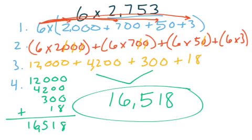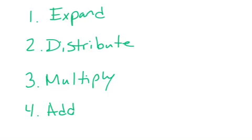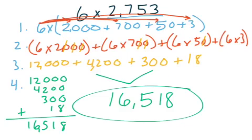So remember, the most important part is that we're using all four of our steps. The first step is to expand, second step is to distribute, third step is to multiply, and our final step is to add. Also make sure on your homework tonight that you are using a separate sheet of paper — there's not enough room on your homework sheet to do all of these steps and be able to see your work. All right, guys, that's all there is to it. I'll see you tomorrow.